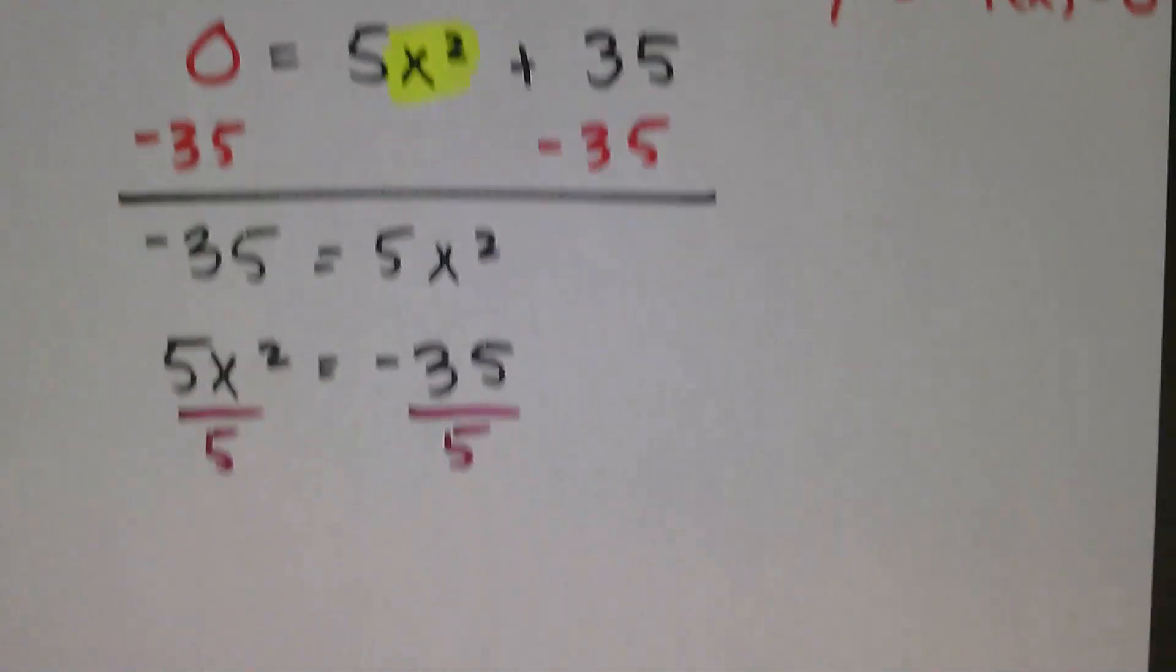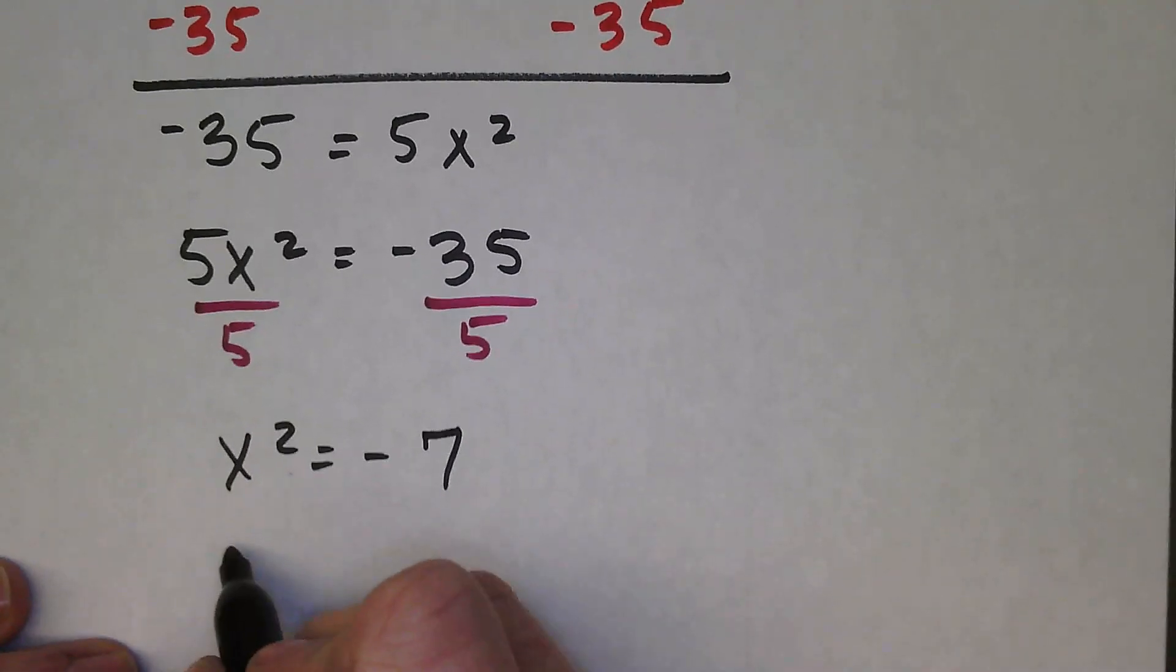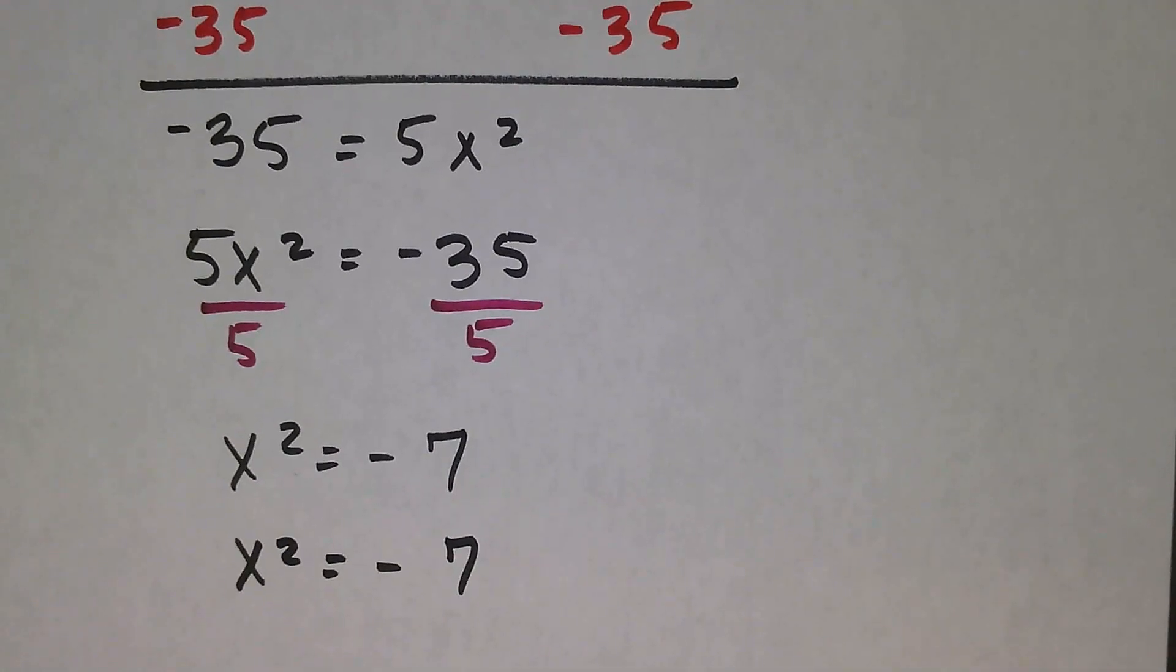That gives me x² = -7. I'm going to write this one more time just so it's very clear in my notes what I'm doing to both sides.